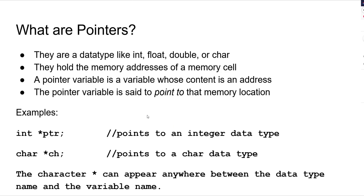So what are pointers? Pointers in C++ is a data type like any other data type — int, float, double, and so on. Ints store whole numbers, floats and doubles store real numbers, char stores a single character. Pointers hold a memory address of a cell.